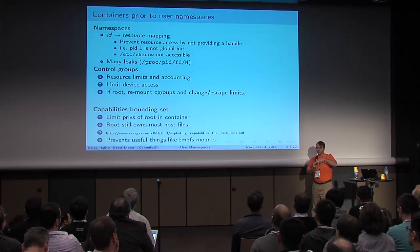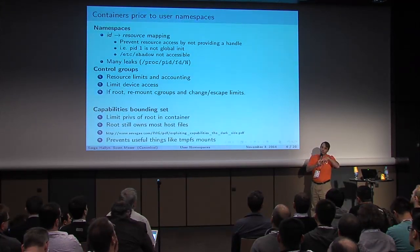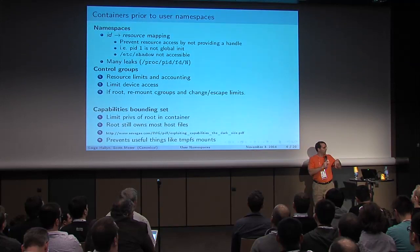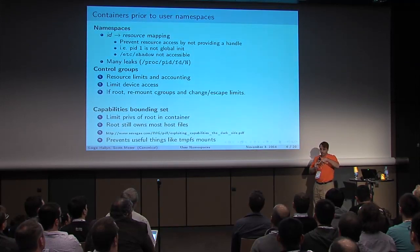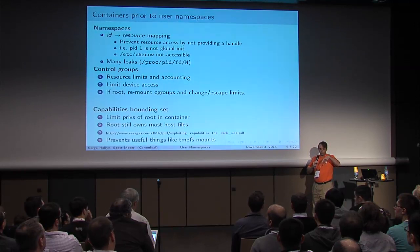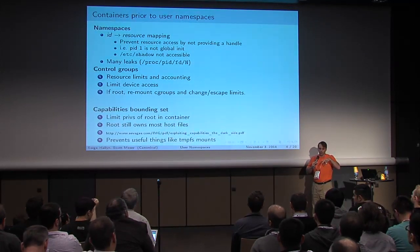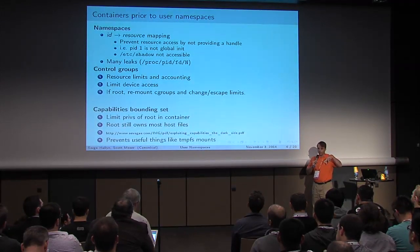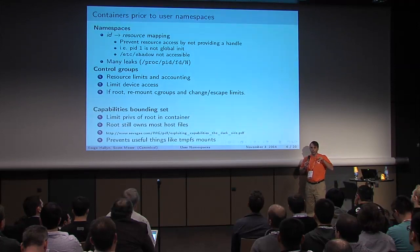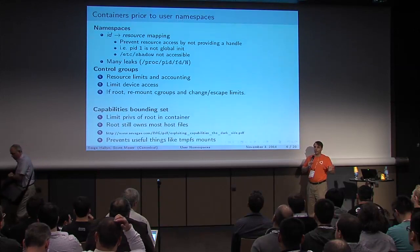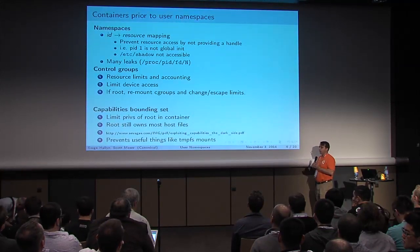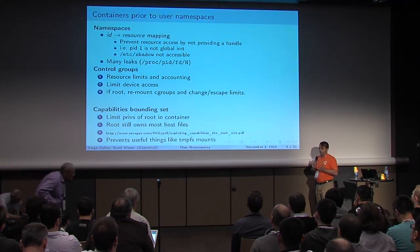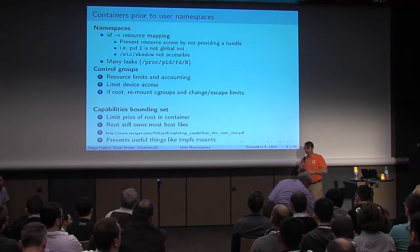Normally when you clone a task, the new task would get a reference to the parent's namespace. But if you asked for CLONE_NEWNS during a clone operation, it would give you a copy of the mount namespace. From that point on, any mount done in one task would not be seen by the other task. The idea was to do what Plan 9 does, where unprivileged users can manipulate their own mount namespace.